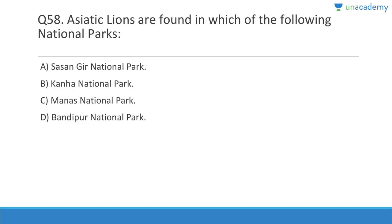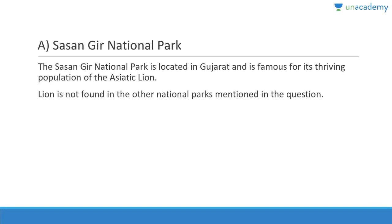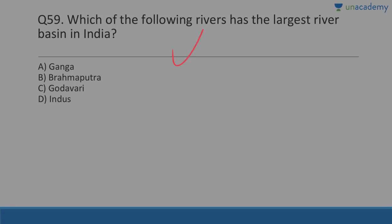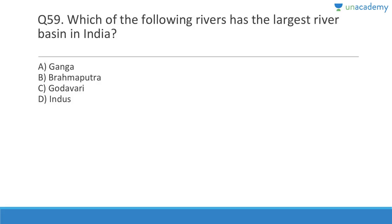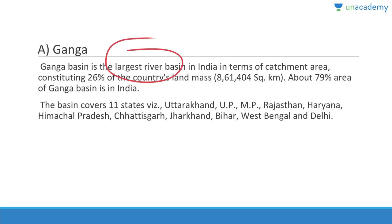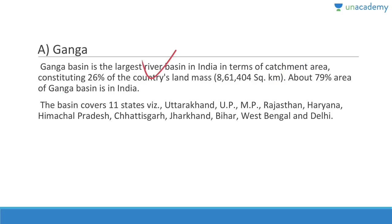Question fifty-eight: Asiatic lions are found in which national park? Answer is Gir National Park. Sasan Gir National Park in Junagadh, Gujarat is famous for its thriving population of the Asiatic lion. Lions are not found in the other national parks listed. Question fifty-nine: Which is the largest river basin in India? Answer is A, the Ganga. The Ganga basin constitutes 26 percent of the country's land mass; about 79 percent of the Ganga basin is in India, and it extends to other countries like Bangladesh. The basin covers 11 states.